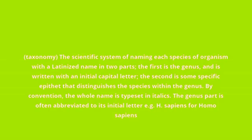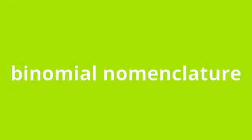Binomial Nomenclature. Taxonomy — the scientific system of naming each species of organism with a Latinized name in two parts. The first is the genus, and is written with an initial capital letter. The second is a specific epithet that distinguishes the species within the genus. By convention, the whole name is typeset in italics. The genus part is often abbreviated to its initial letter, e.g., H. sapiens for Homo sapiens.